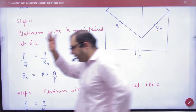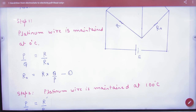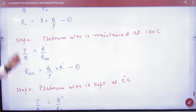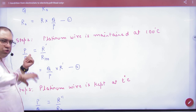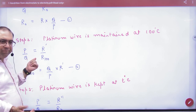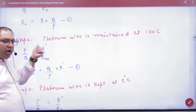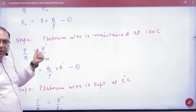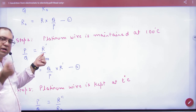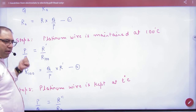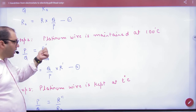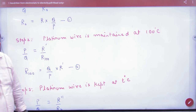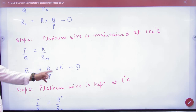You have to find R0 by cross multiplication. Then the second step is: you have to take the platinum wire to 100 degrees Celsius — the steam point. You have to balance the bridge again. So P by Q is equal to R by R-dash, where R-dash corresponds to R100. This ratio equals R by R-dash, and so R100 is obtained from here.